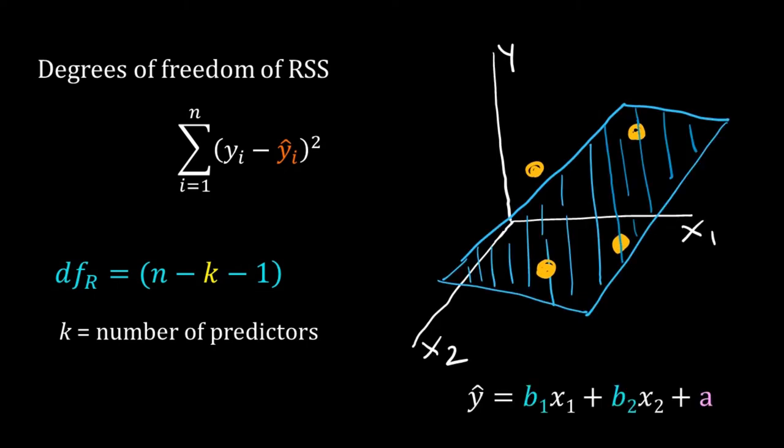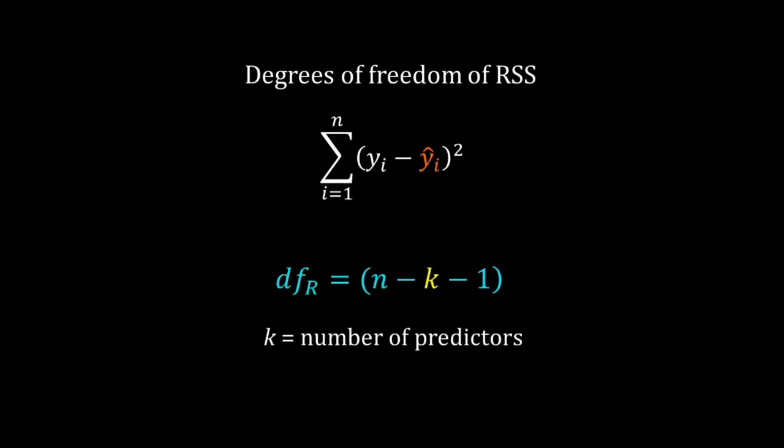Now consider a multiple linear regression with two predictors x1 and x2. Here we are fitting a plane and we know that we need three non-colinear points to define a plane. So for regression we need at least four data points. Otherwise there will be an exact fit and there will be no need of regression. So the degrees of freedom of RSS should be n minus 3 and that matches with our formulation n minus k minus 1. For this regression k is 2. We have two independent variables x1 and x2. So in general the degree of freedom of RSS is n minus k minus 1, where k is the number of independent variables or predictors.